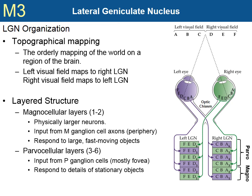The other four layers of the LGN, layers 3 through 6, are called parvocellular layers, because they contain physically smaller neurons — parvis is Latin for small. These small neurons receive input from P ganglion cells, that is, the ganglion cells found primarily in the fovea, and have small receptive fields. So the parvocellular layers of the LGN also have small receptive fields, making them respond to fine details of stationary objects.